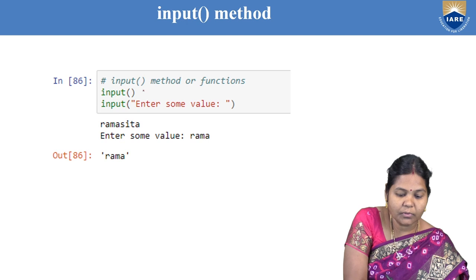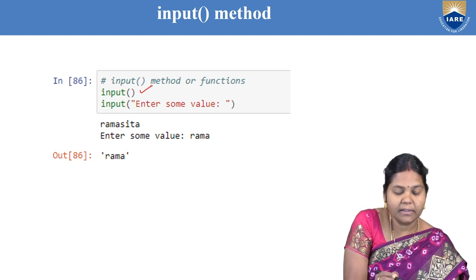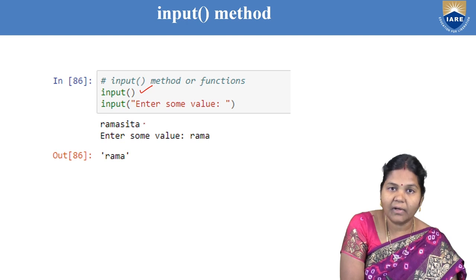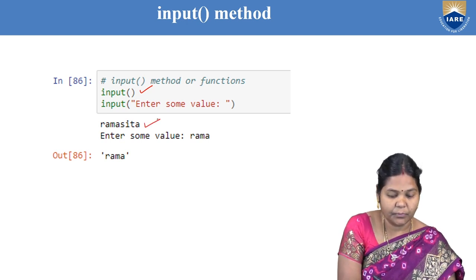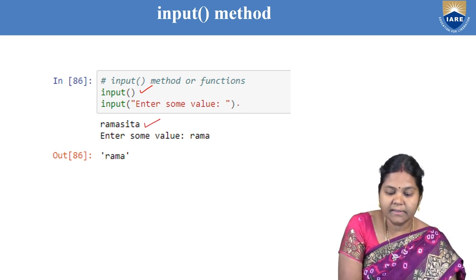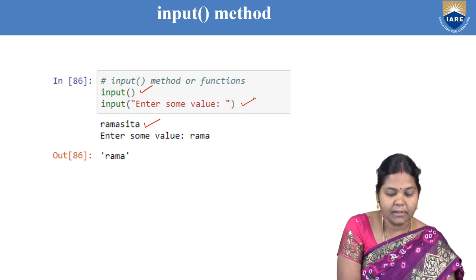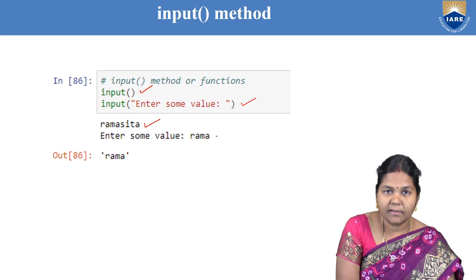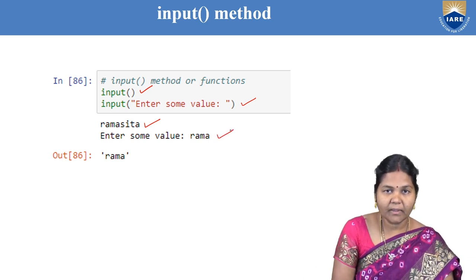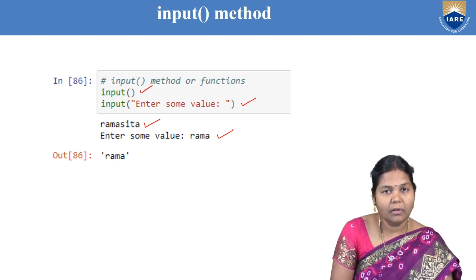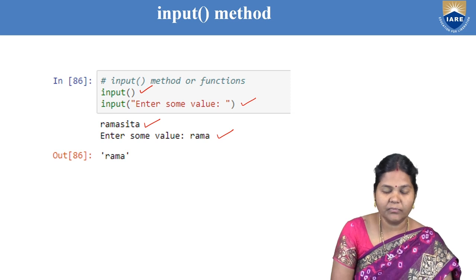In the first example, I have written the input method without giving any message, and I am giving some value and it is reading that input. In the second case, I have entered some value as a message to the input method and I am entering the value 'rama' after this message. So without a message, or with a message, you can read a value using the input method.